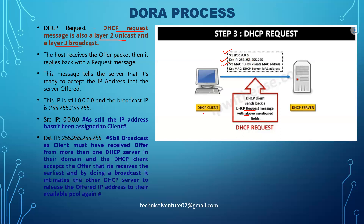The source MAC is the DHCP client's MAC address and the destination MAC is the DHCP server's MAC address. The destination IP remains broadcast because the client may have received offers from more than one DHCP server. The DHCP client accepts the earliest offer it receives, and by broadcasting the Request, it also informs other DHCP servers to release their offered IP addresses back to their available pool.